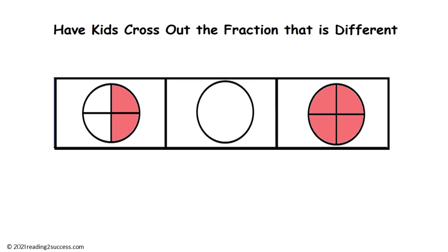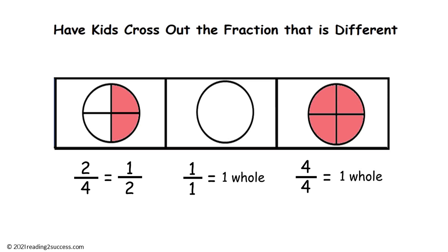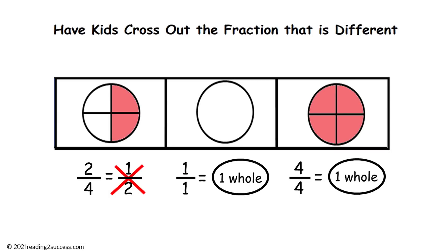Now the second problem. Two-fourths equals one-half. Then we have one over one, meaning the whole circle is full, so that equals one whole. And then we have four over four — all four parts are full, so it equals one whole. The second and third both equal one whole, so they are equivalent fractions. The first one is one-half and should be crossed off.